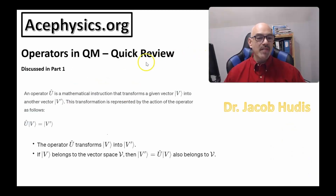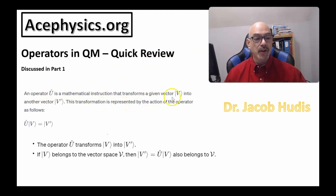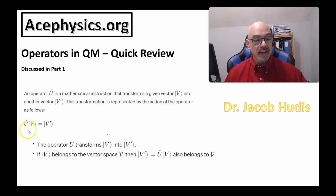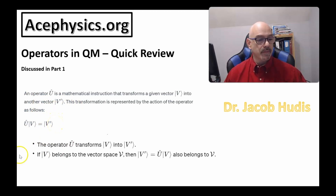On this slide I want to have a quick review of operators in quantum mechanics. An operator U is a mathematical instruction that transforms a given vector V into another vector V prime. The transformation is represented as U acting onto V equals V prime, and U keeps V within its own vector space.